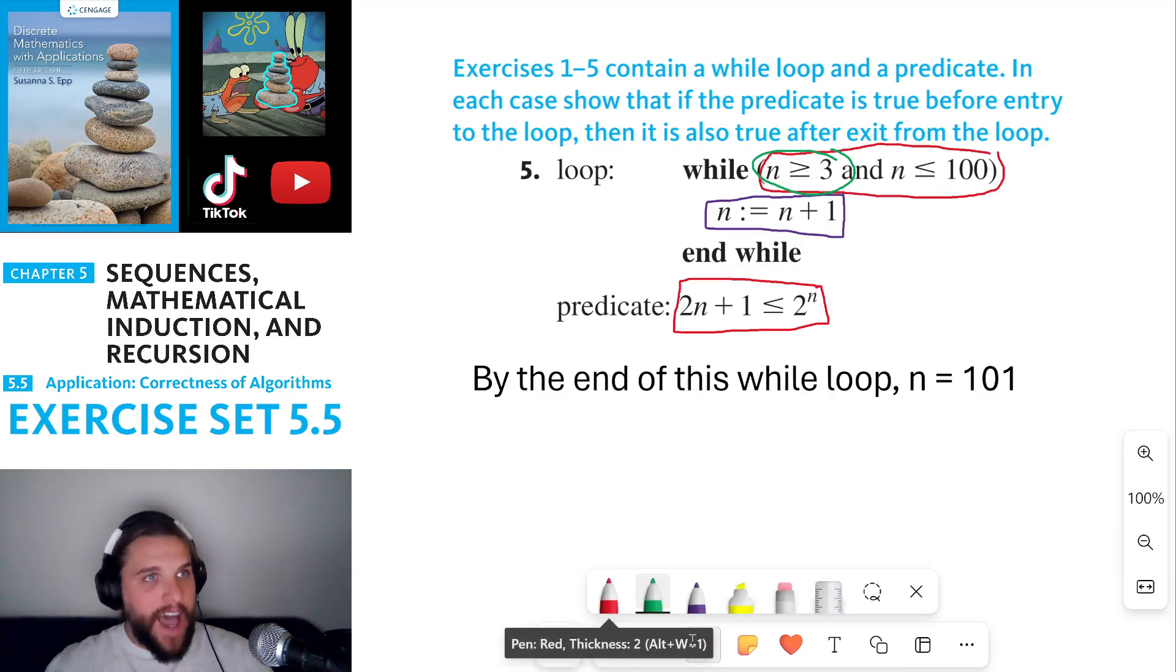So now we have to ask ourselves, is the predicate still satisfied? Is it still true that 2n plus 1 is less than or equal to 2 to the n for n equals 101? Well, we can check that.